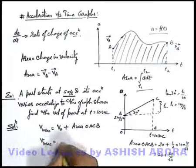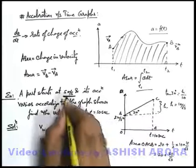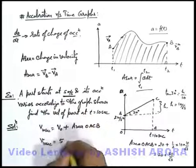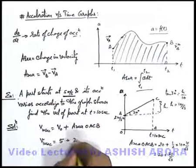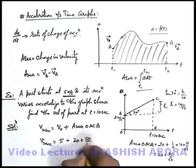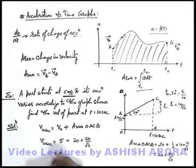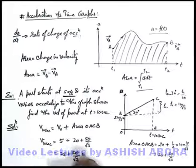So if this area when we add here this will be velocity at 10 second. We can directly calculate it by 5, which is velocity at time t equal to zero which is given the initial velocity, plus 20 plus 50 by root 3. So this will give us 25 plus 50 by root 3 meters per second is the answer to this question.